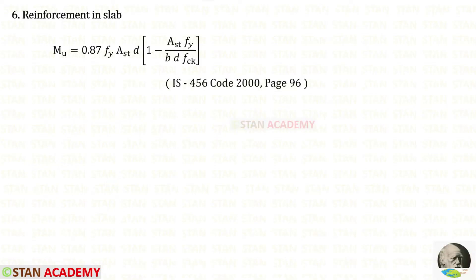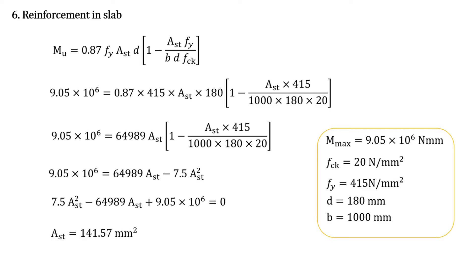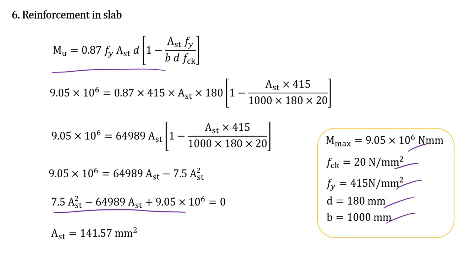Now we are going to design the reinforcement in the slab. From page number 96, we can copy this formula. In the formula, let us apply all of the values. After applying and solving using the calculator, for AST we will get 141.57 millimeter square.